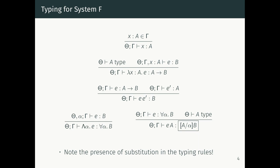Now that we have these two judgments we can write down the typing rules. Most of these rules are unchanged from the simply typed lambda calculus. For term variables we check that x colon A occurs in the term variable context gamma. When we check a lambda expression we add the term variable to the context and then check the body, with the wrinkle that we check the type annotation is well-formed. For function applications we check that the function has type A arrow B and that the argument e-prime has type A.